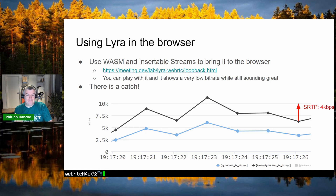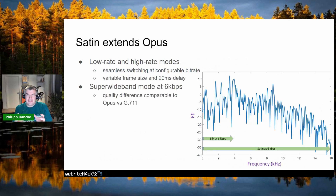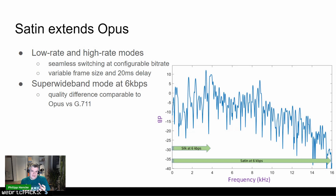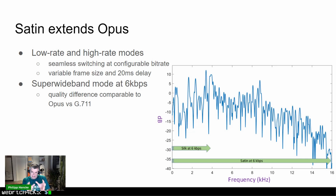Satin is very different from Lyra — it extends Opus. It has a low-rate and high-rate mode with seamless switching between them at a configurable bitrate. Like Opus and Lyra, it has variable frame size and 20-millisecond delay, making it suited for real-time use. Looking at audio encoded with SILK versus Satin: SILK at 6 kbps cuts off frequency at 4 kHz, while Satin goes up to 16 kHz. In terms of voice quality, that difference is comparable to what you hear between Opus and G.711 — a big achievement.